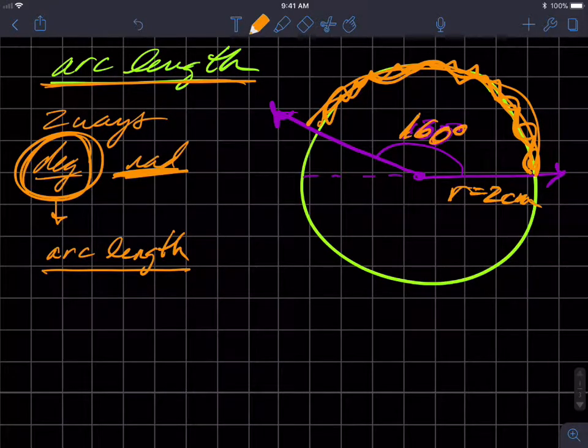We're going to set part of that length as a ratio over the whole of the length, which would be the circumference, and circumference as previously mentioned is 2πr.